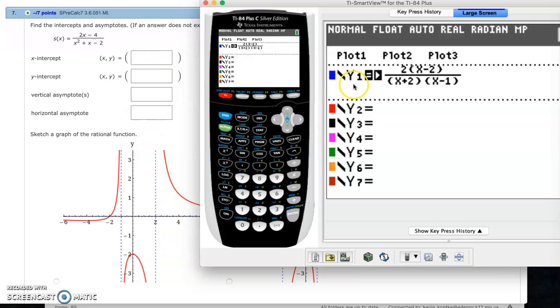As far as this stuff goes, x-intercept, if I just set my numerator equal to 0 I can just solve that. So I got x-intercept at 2. Y-intercept would be negative 4 over negative 2, so y-intercept at 2. So (2,0) and (0,2).